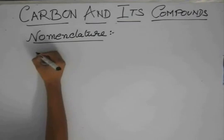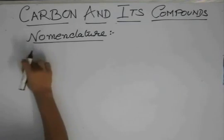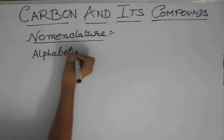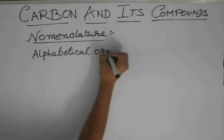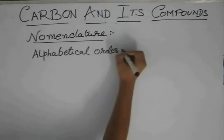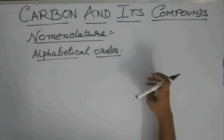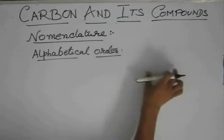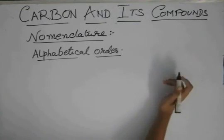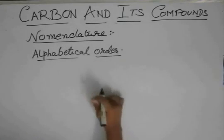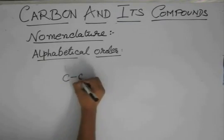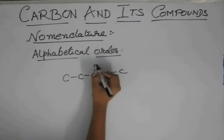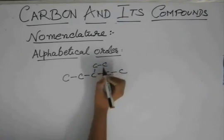So we were talking about R. Now, this says that the previous alphabet will come before the next alphabet in case of two different groups attached to the carbon chain. Like, suppose we have this.